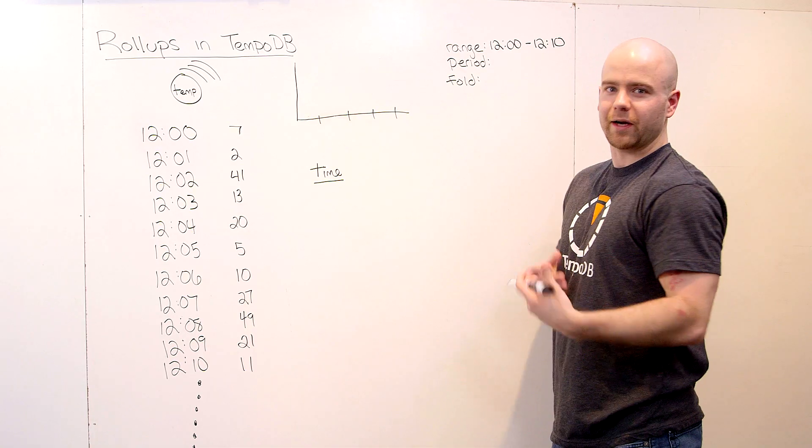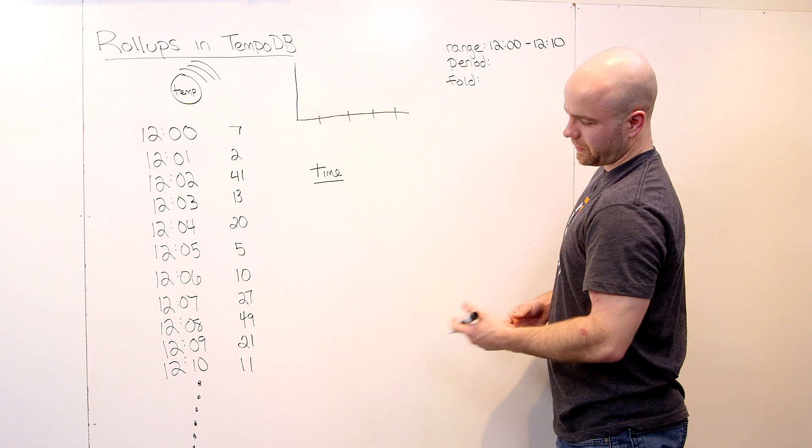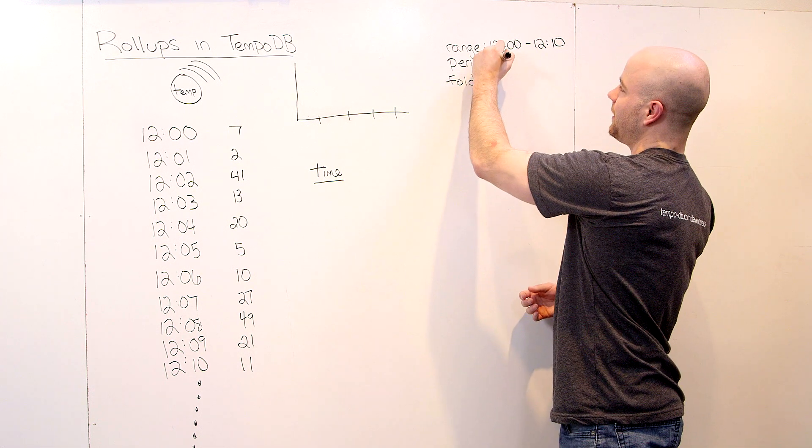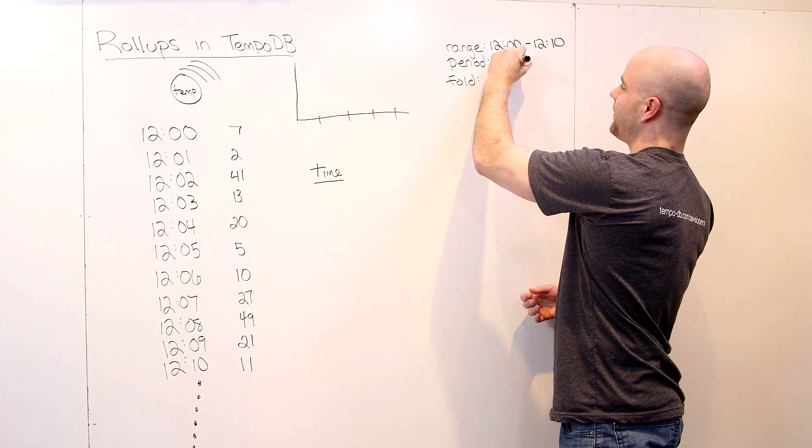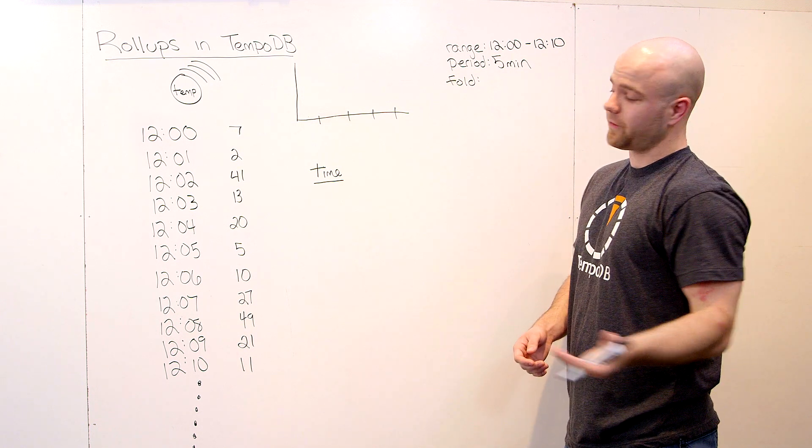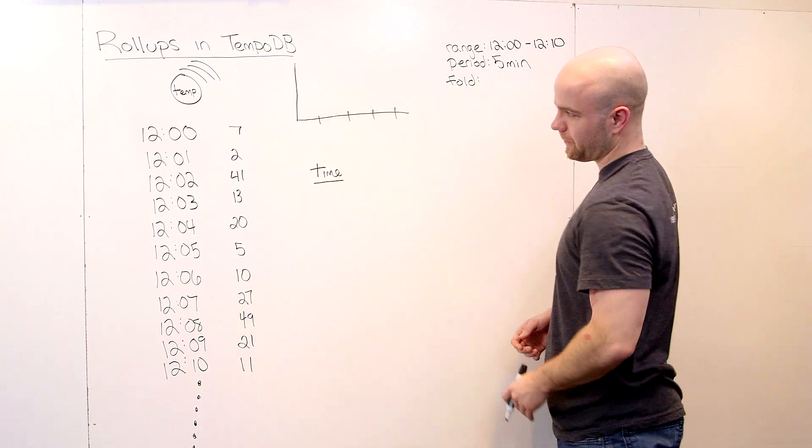Period is the buckets that you want to analyze. Since we've got about 10 minutes here, we're going to divide it in half. We're going to analyze our data into five-minute buckets. So we should end up with two values out of this stream of 11 points.